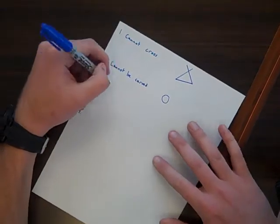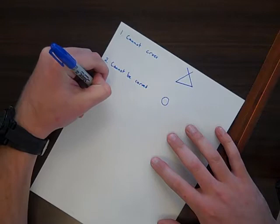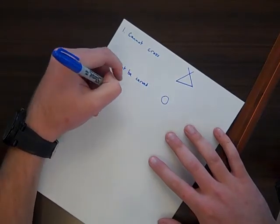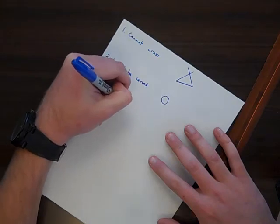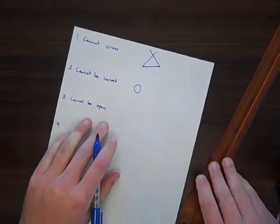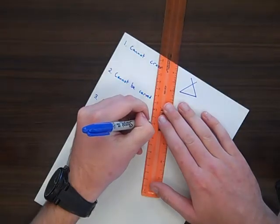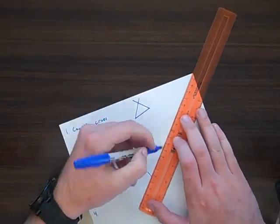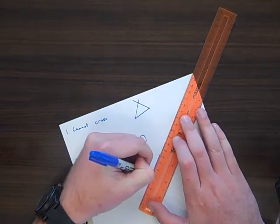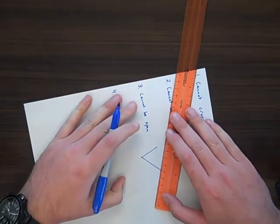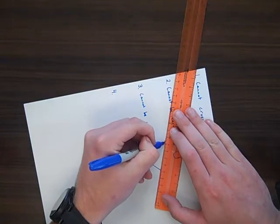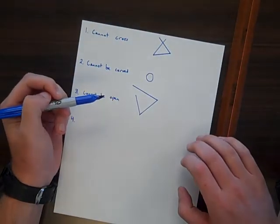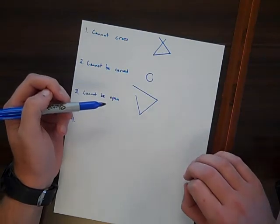The third rule is that lines cannot be open. And I'll give you an example of what that looks like. I like to refer to it as a fence. If you have an animal that you want to keep in a fence, it's got to be closed. Any openings like this, it is not a polygon. A polygon has to be a closed figure.